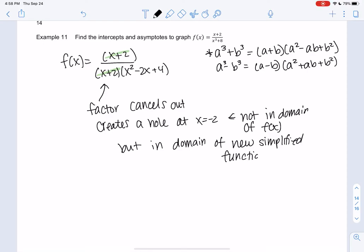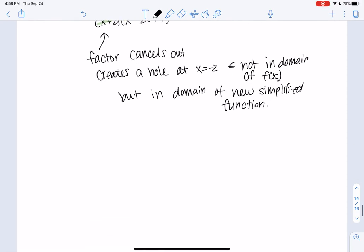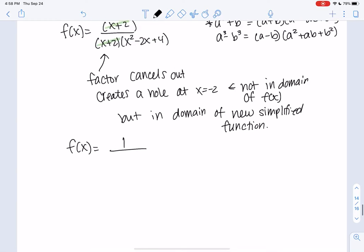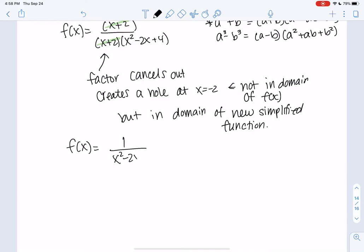So our new simplified function, which we're going to work with from here on out, is 1 over x squared minus 2x plus 4, where x is not negative 2, and that's again coming from the hole. So even though x equals negative 2 is allowed in this new function, it's not allowed in the original, so it's not in the domain.